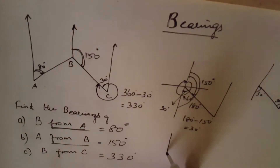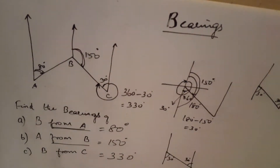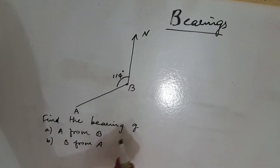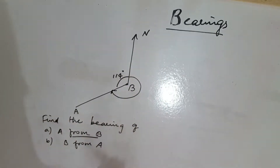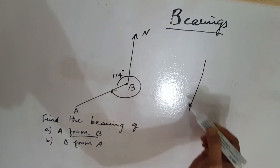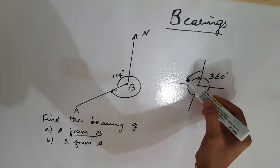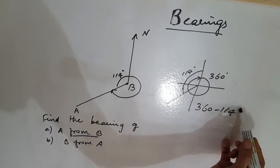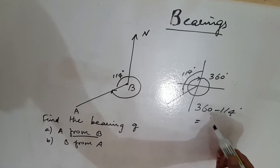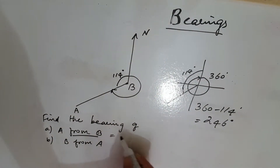This is 30 degrees, so this is also 30 degrees. In this question, find the bearing of A from B. From B, this portion comes. Already we know this full is 360 degrees. This portion is 114 degrees, so 360 minus 114 degrees is equal to 246 degrees. So this is 246 degrees.